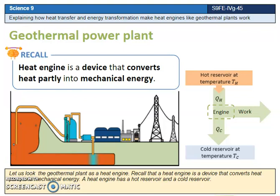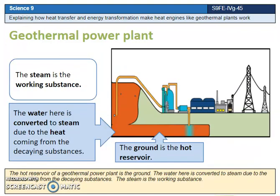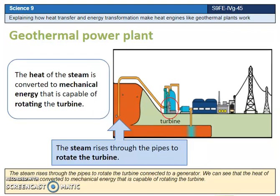A heat engine has a hot reservoir and a cold reservoir. The hot reservoir of the geothermal power plant is the ground. The water here is converted to steam due to the heat coming from the decaying substances. The steam is the working substance, and it rises through the pipes to rotate the turbine connected to a generator.